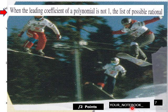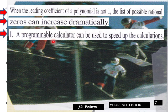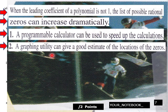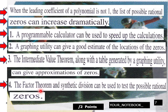A quick note: when the leading coefficient of a polynomial is not one, the list of possible rational zeros can increase dramatically. A programmable calculator can be used to speed up the calculations. A graphing utility can give a good estimate of the locations of zeros. The intermediate value theorem, along with a table from a graphing utility, can give approximations of zeros. The factor theorem and synthetic division can be used to test the possible rational zeros.